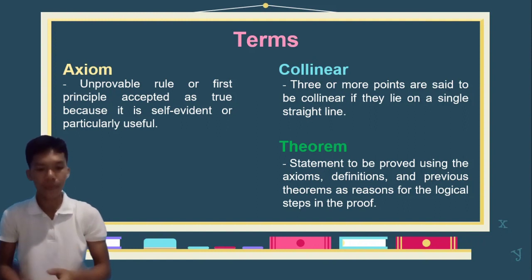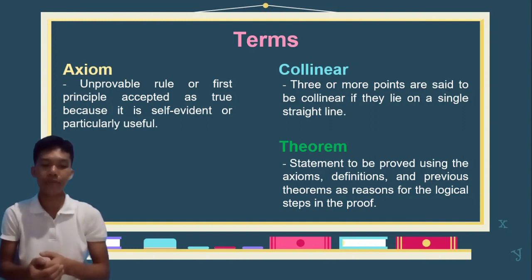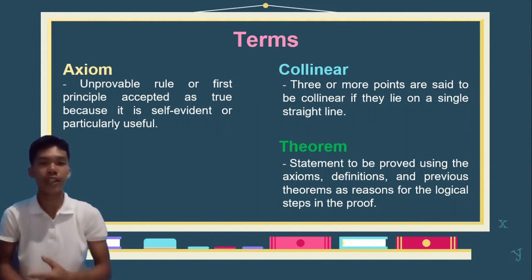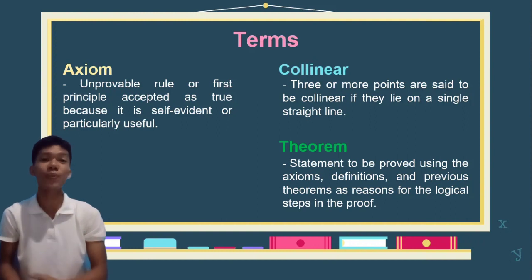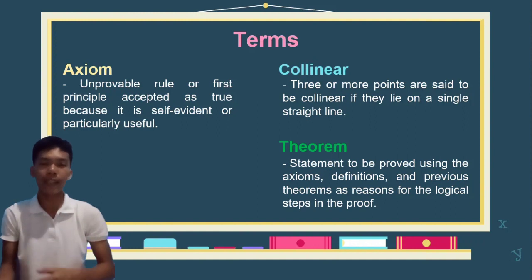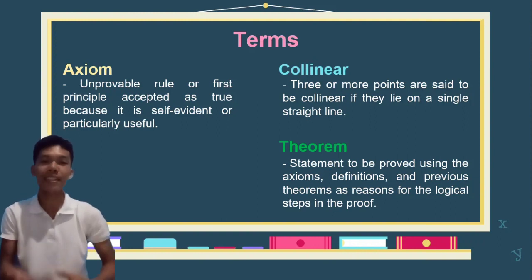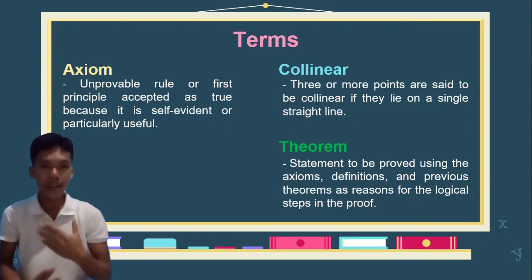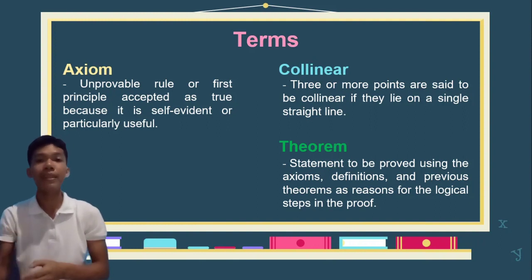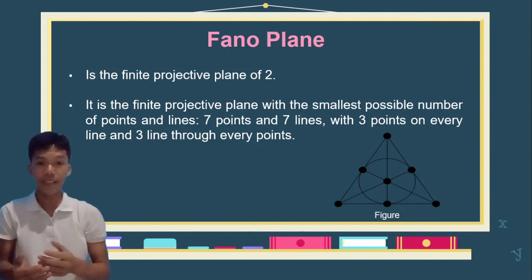The last term is theorem — a statement to be proved using the axioms, definitions, and previous theorems as reasons for the logical steps in the proof. It is quite difficult to state a theorem without verification, but we use the axioms and other theorems to prove that a theorem is correct. A theorem is dependent on the axioms, unlike an axiom which is independent and needs no proof, while a theorem does need proof.